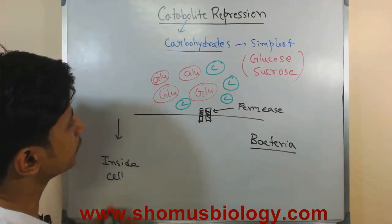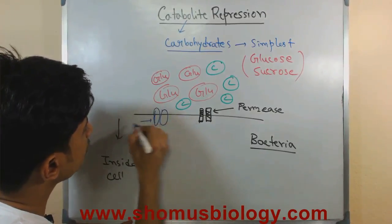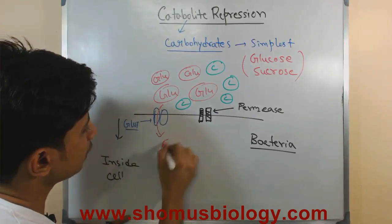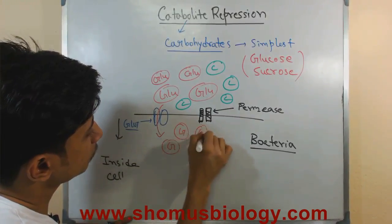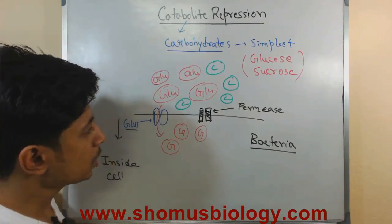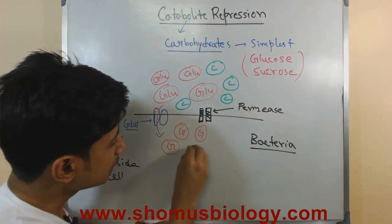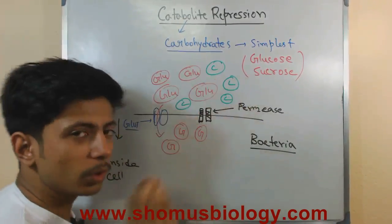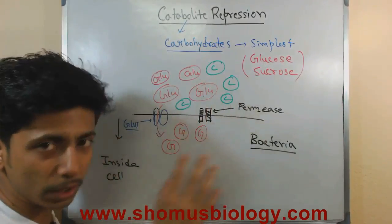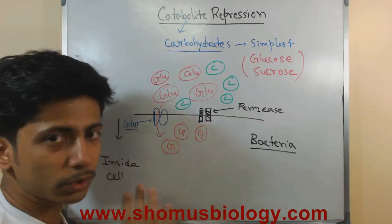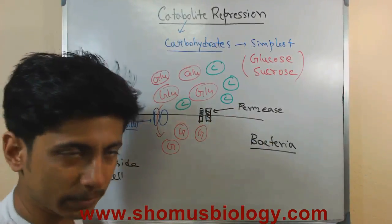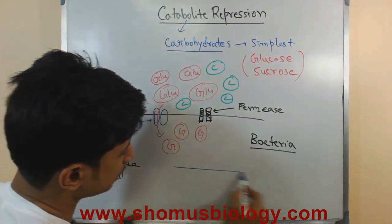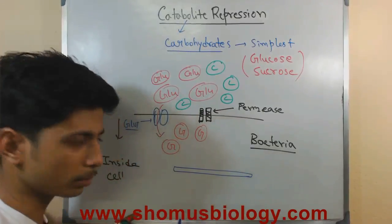Through those glucose transporters, glucose is transported inside the cell. Once a lot of glucose is inside the cell, it will drive internal signaling. The choice for the bacteria is either taking up glucose or lactose. For either, they need the appropriate channels to be open. Looking at the bacterial genome, there are different operon concepts for genetic regulation. There is a region called the promoter, which is the controller section.